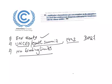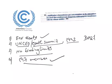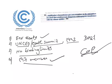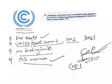UNFCCC provides a framework for protocols that aim to set binding limits on greenhouse gases, and 197 member countries have ratified it. These nations meet every year to discuss climate change strategy, and these meetings are called the Conference of Parties. The Conference of Parties is the supreme decision-making body of the UNFCCC. All states that are parties to the convention are represented and promote its effective implementation. The first COP meeting was held in Berlin, Germany in March 1995.